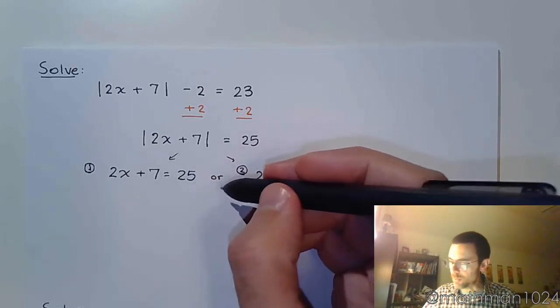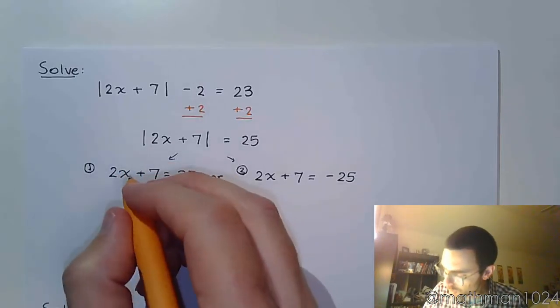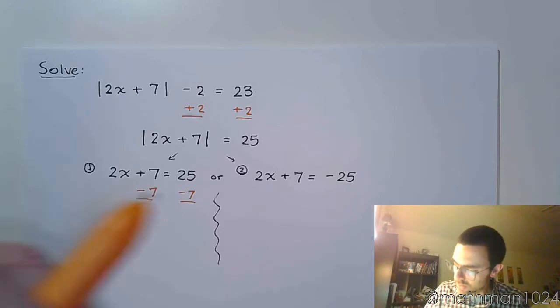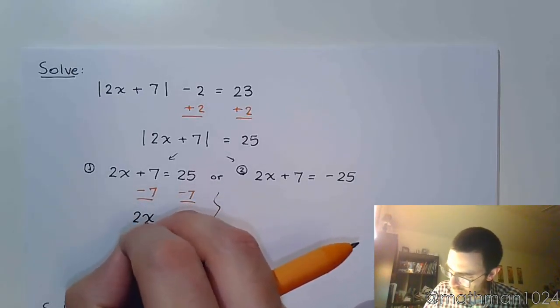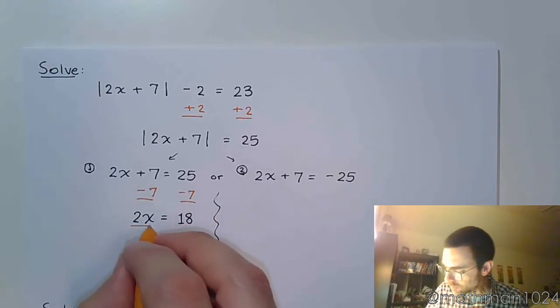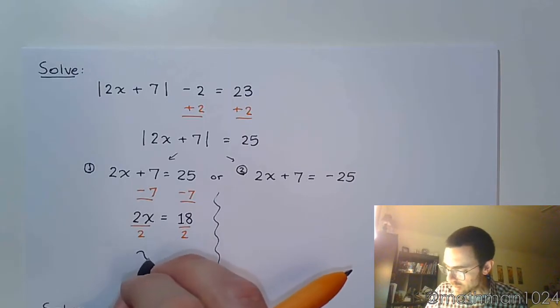And then we just take them separately and we solve them. Starting with this one, we subtract 7 on both sides. 2x is equal to 18. We divide both sides by 2, and x equals 9.